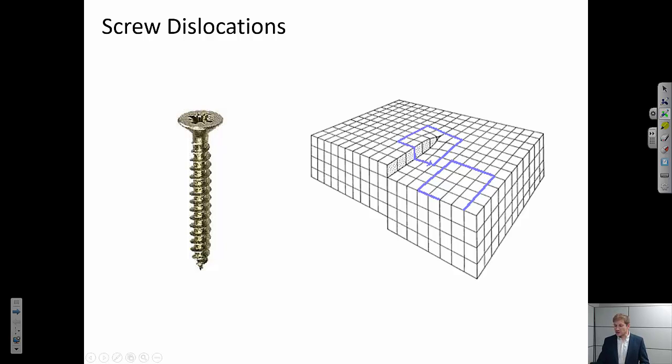It gets its name, screw dislocation, because if we start at one point on the crystal lattice and we walk a path around, we end up immediately below that point. If we continue to do that, we would end up below that point again and so on. So it follows the helical path of a screw.